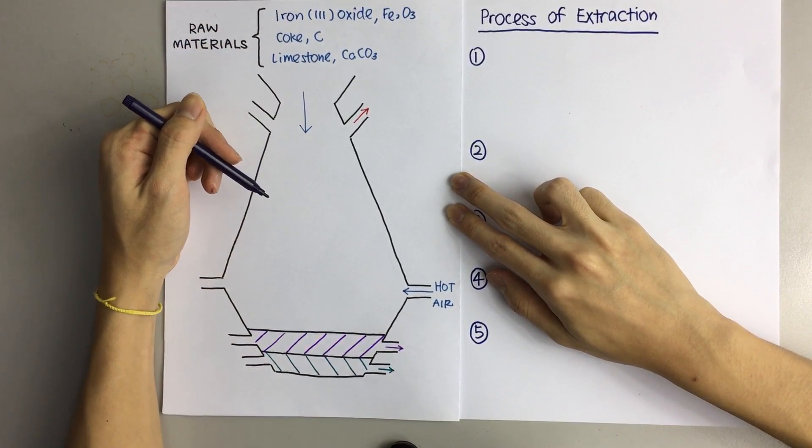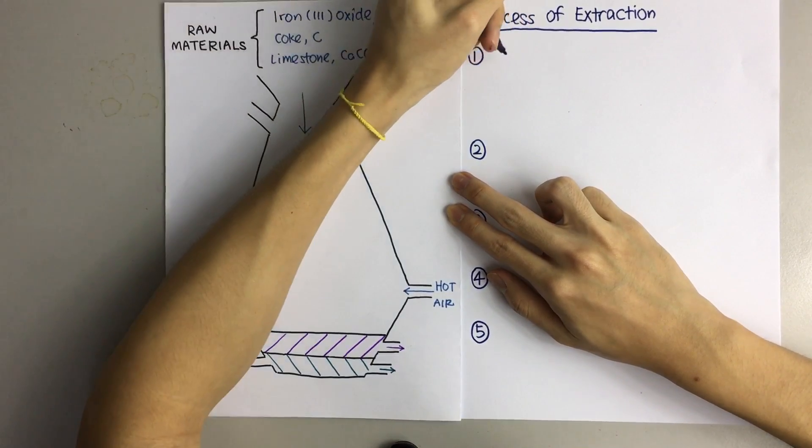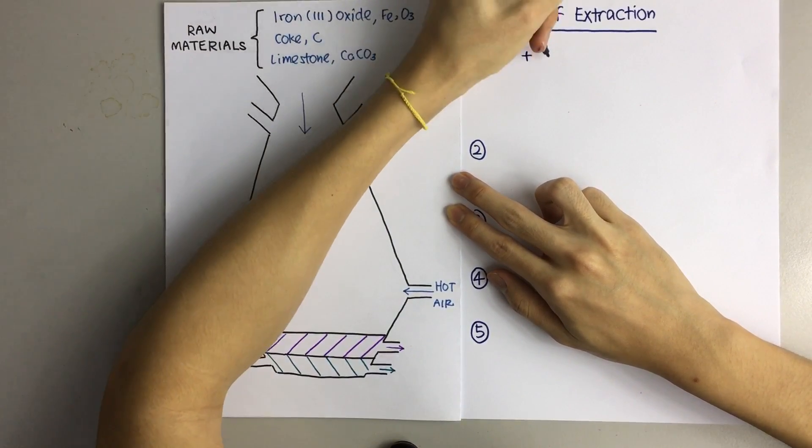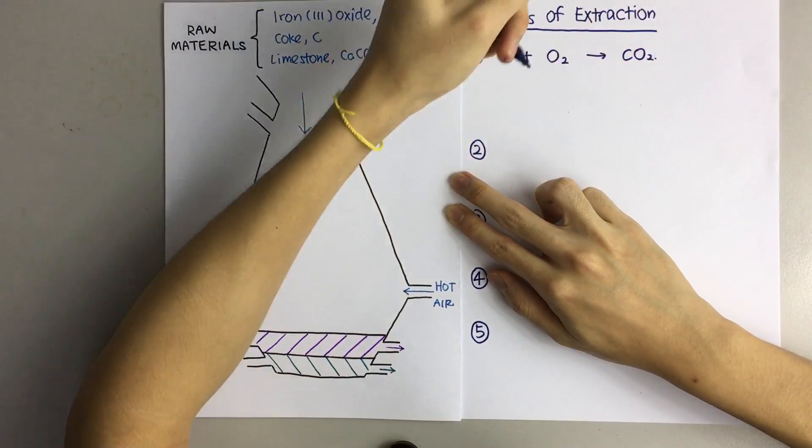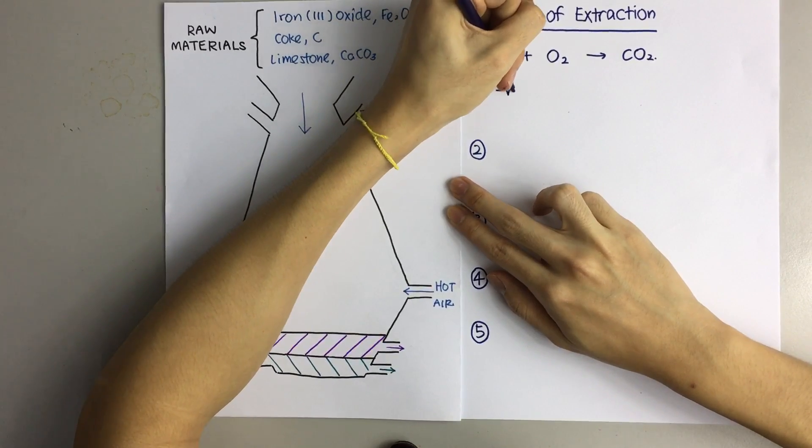Now the first reaction of the blast furnace is actually combustion. Carbon is reacted with oxygen to form carbon dioxide. This reaction is very exothermic.